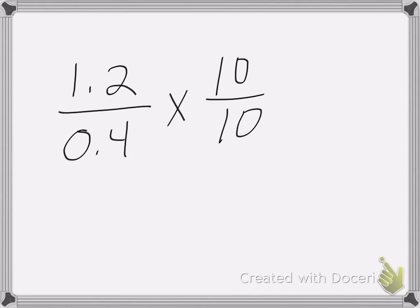So on this problem, we have a multiplication and division problem combined. So to make this problem easier, I'm going to multiply it by 10 over 10. And 10 over 10 is equal to 1, so I won't change my numbers or my answer.